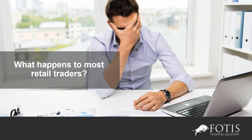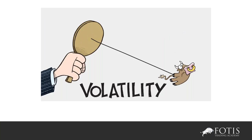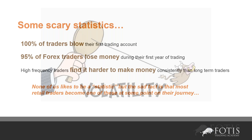What happens to most retail traders? I'm going to show you statistics taken from the brokers themselves. Has anyone traded and found yourself in a situation where you were right about the direction of the market — for example, it's going up, it's going down — but because of choppiness, because of volatility, because of some weird conditions in the market, you ended up having a loser? Your stop loss was hit and you lost money. This is a very common reason why you lose money: it's the volatility, the choppiness, the current conditions in the market.